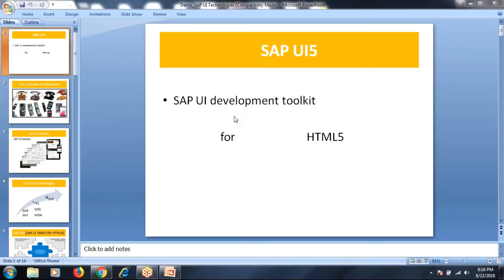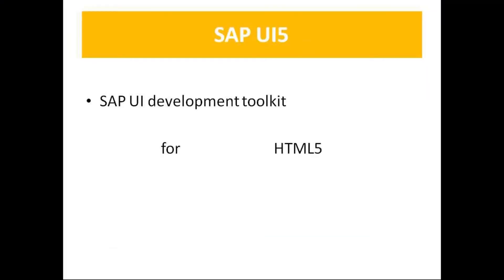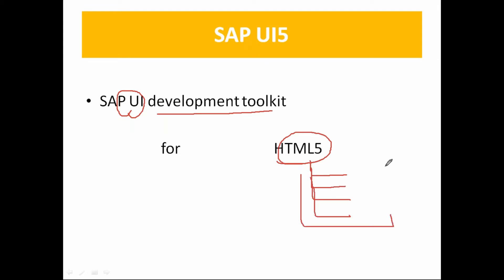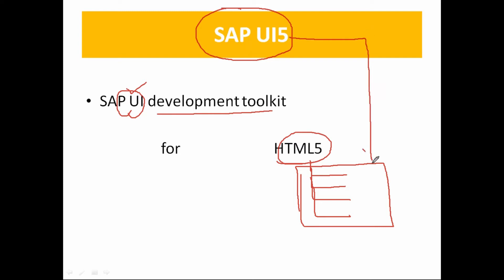Welcome to SAP UI5. As the name suggests, UI5 stands for the SAP UI development toolkit. It is more about user interface, which means it is a front-end technology. This is the SAP UI development toolkit for HTML5 — whatever can be done through HTML5 to design web pages, the same thing can be done through SAP using this UI technology.